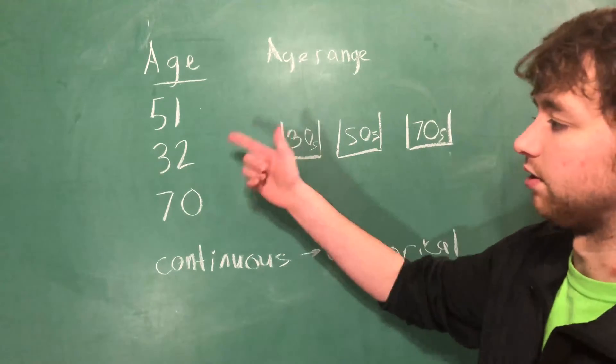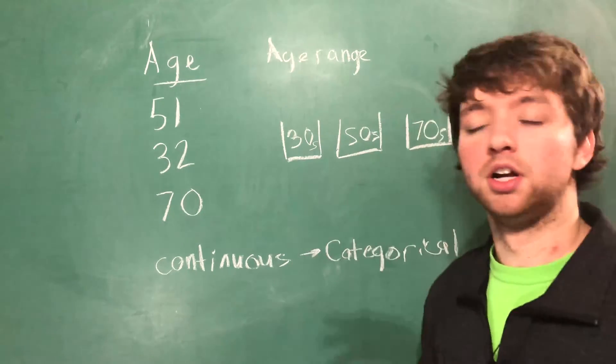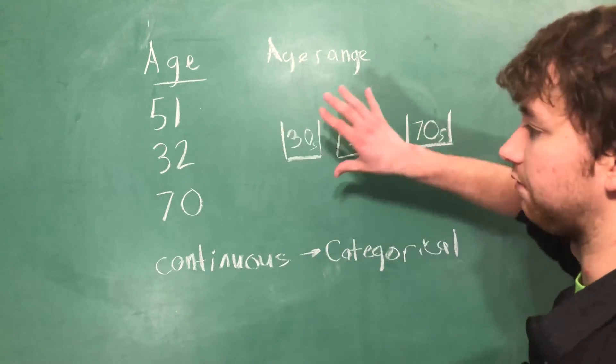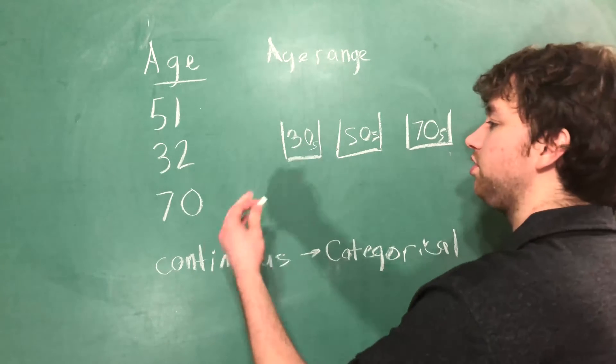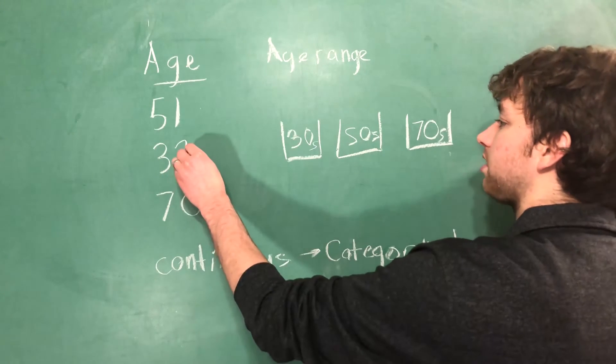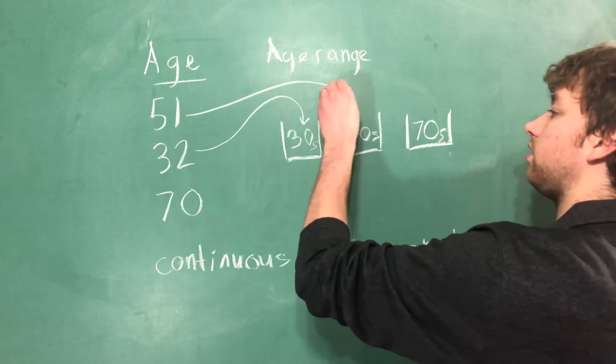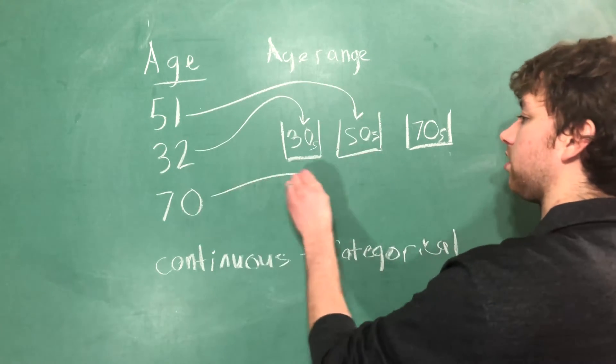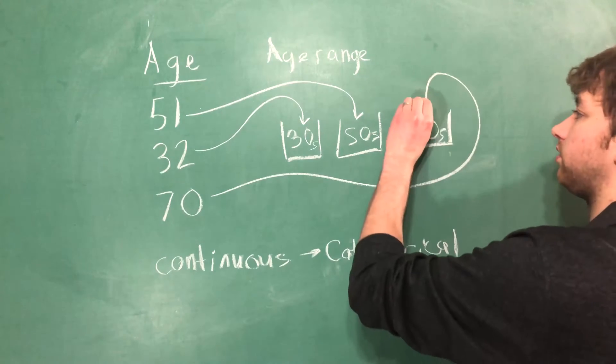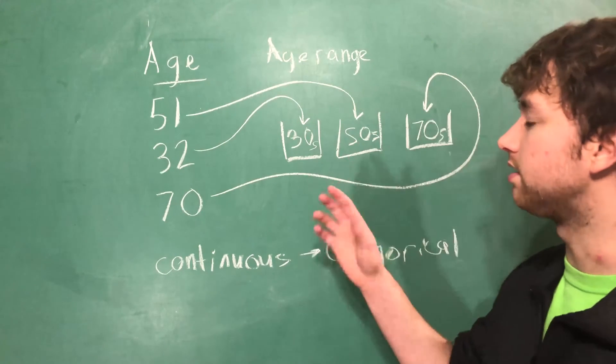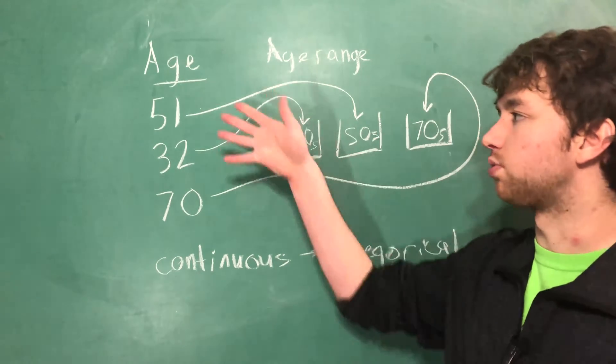All we have right now is 50, 30, and 70 so I'm only putting these up here. But you would bin for every single group of tens. Then you can just visualize taking these values and putting them in these bins and then what your new data is is what bin each one of these goes into.